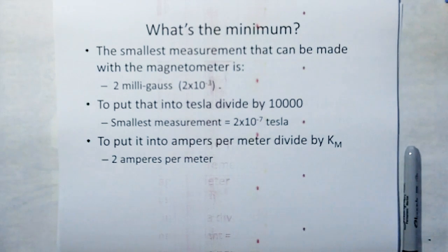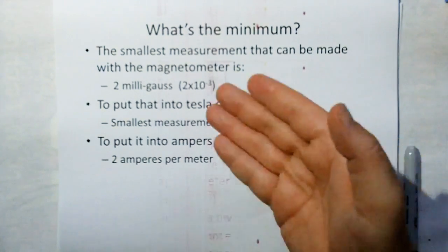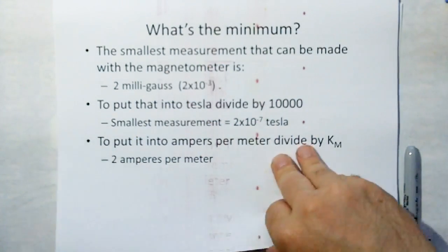But we're getting out of using these classical units. And we're going to put these into the new ethereal mechanics unit. We're just going to divide by Km, which puts it into the old unit of amperes per meter, which is 2 amperes per meter, which in my opinion is a much simpler unit to use. It makes more sense than a Tesla or a Gauss.